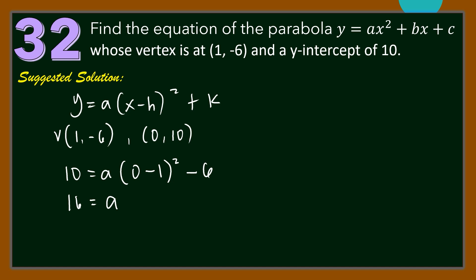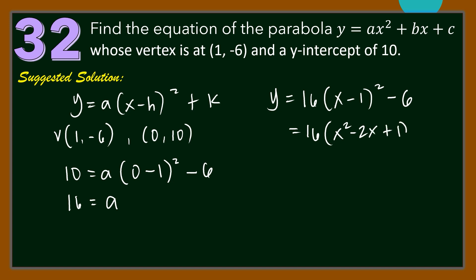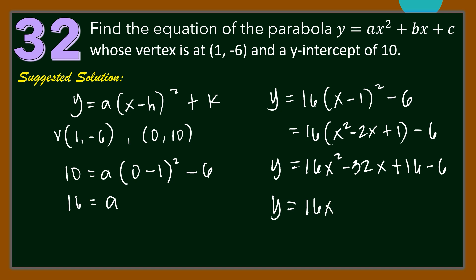Then substituting A equals 16 and the vertex at (1, negative 6) into the vertex form of the equation of the parabola, we have Y equals 16 times (X minus 1) squared minus 6. Expanding, (X minus 1) squared is X squared minus 2X plus 1, so Y equals 16 times (X squared minus 2X plus 1) minus 6, which equals 16X squared minus 32X plus 10.